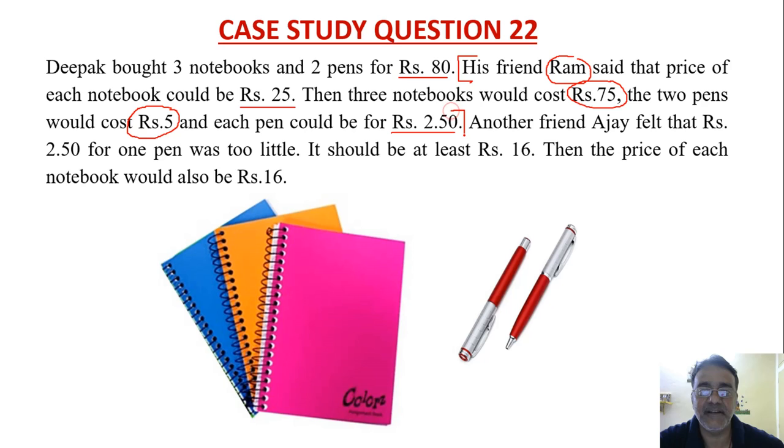Yahaan se yahaan tak Ram na estimate kiya. Ki ek notebook ka 25 hoga. So 25 into 3, 75. And each pen is 2.50. So 5, 75 plus 5 total Rs. 80. Now another friend Ajay felt that Rs. 2.50 for one pen was too little. It could be at least Rs. 16. Then the price of each notebook would also be Rs. 16. 16 into 3, 48 or 16 into 2, 32. 48 plus 32, 80.